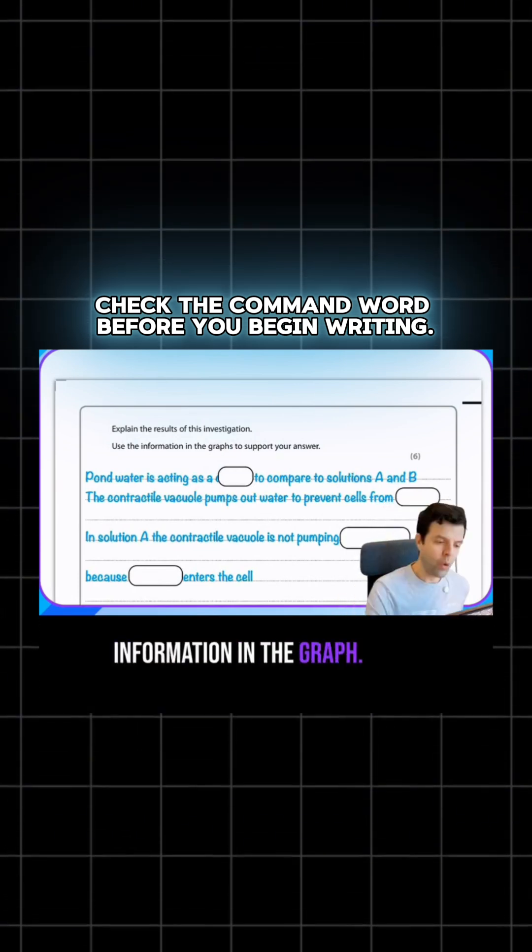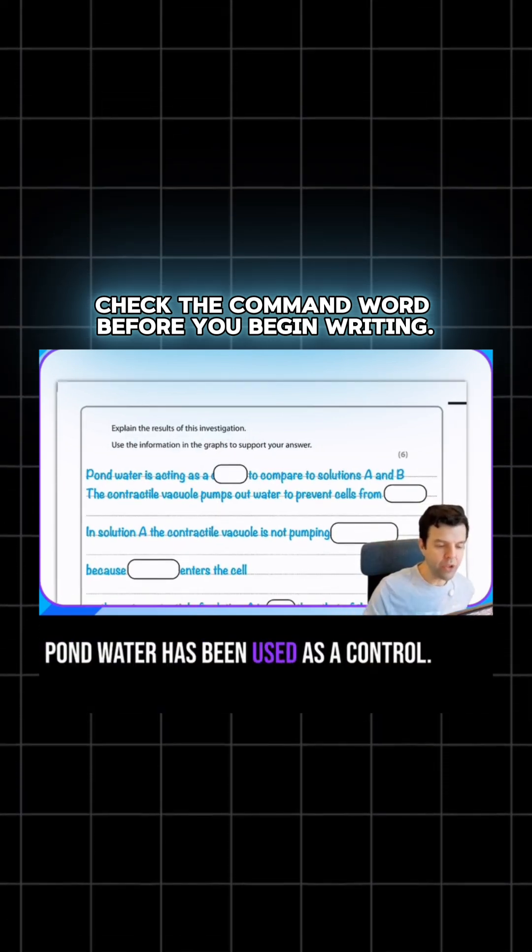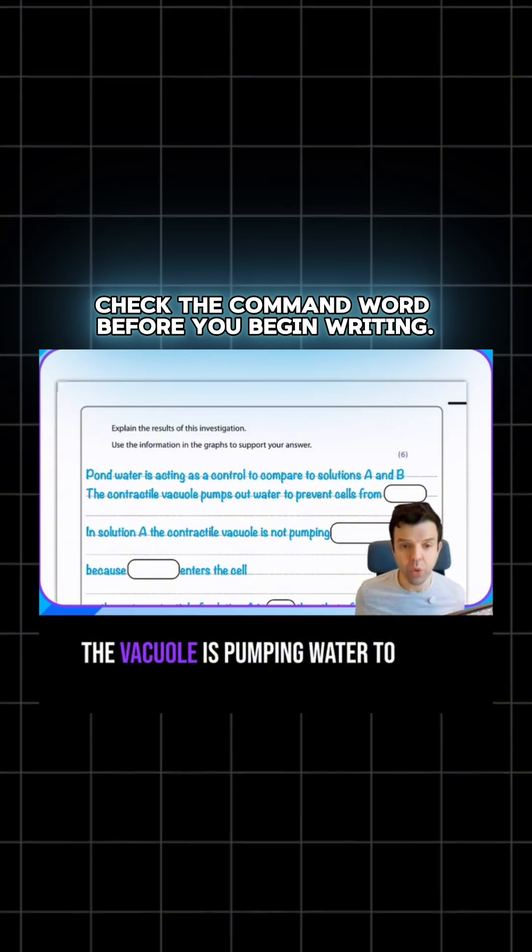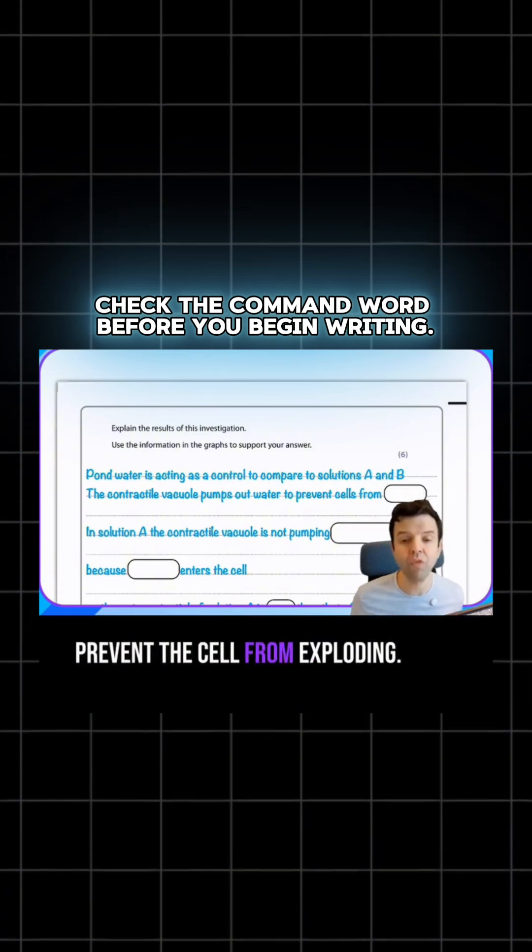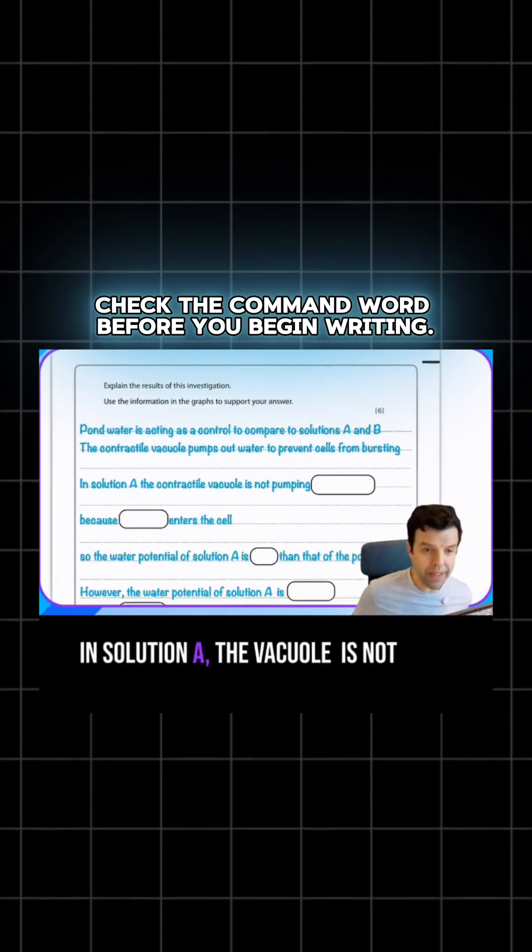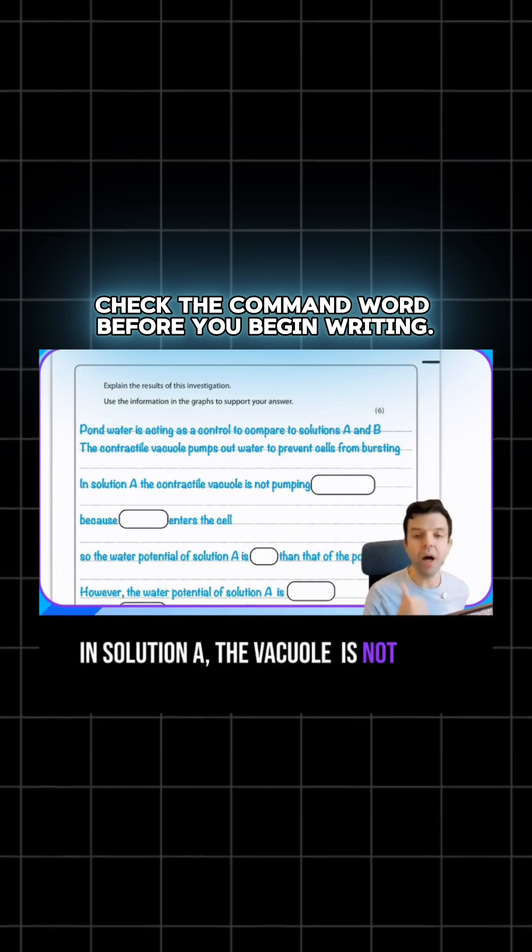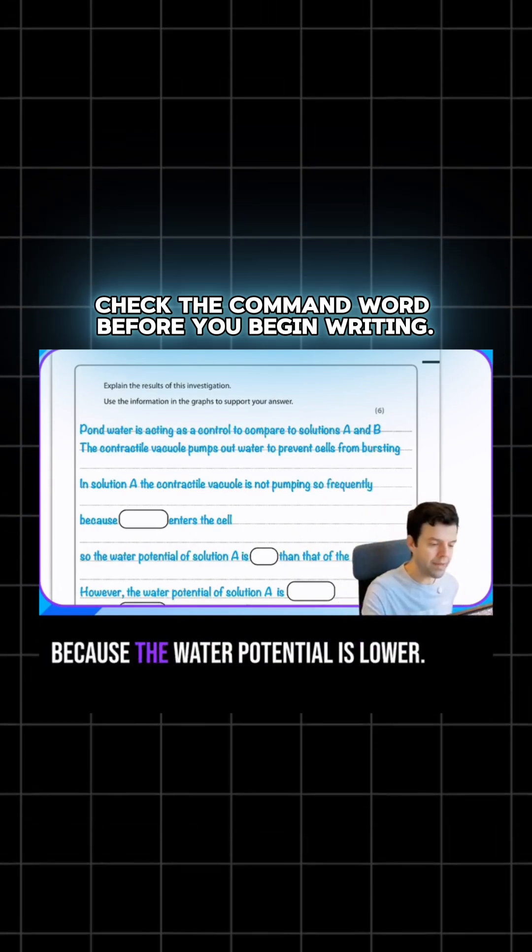Let's answer the question: explain the result using information in the graph. Pond water has been used as the control. The vacuole is pumping water to prevent the cell from exploding. In solution A, the vacuole is not pumping as hard as the first time because the water potential is lower.